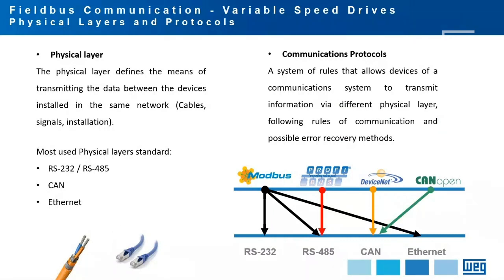Before covering the different communication protocols, it's important to understand two concepts: physical layer and communication protocol. The physical layer is basically the means of transmitting information from one device to another — how the signal will be transmitted, whether by cables, what kind of signal is used, and how cables are installed. The most common physical layers used in industry today are RS-232, RS-485, CAN, and Ethernet. The physical layer is essentially the hardware of the installation.